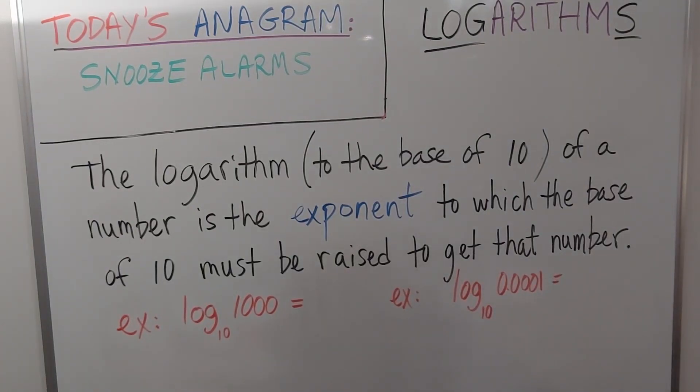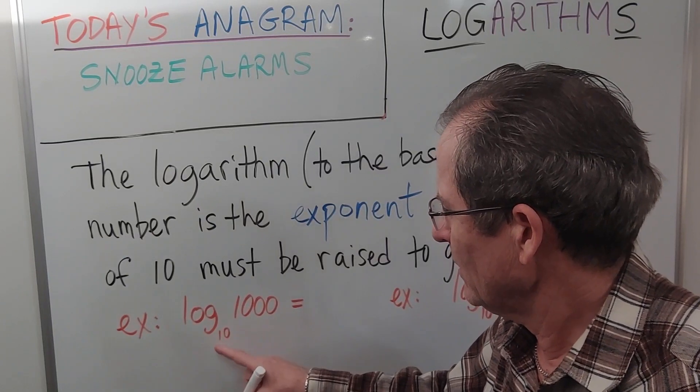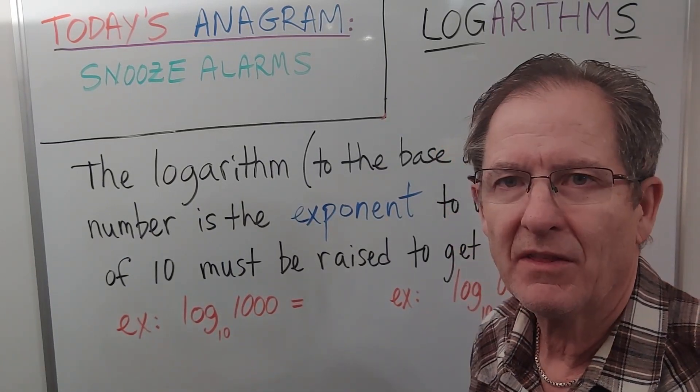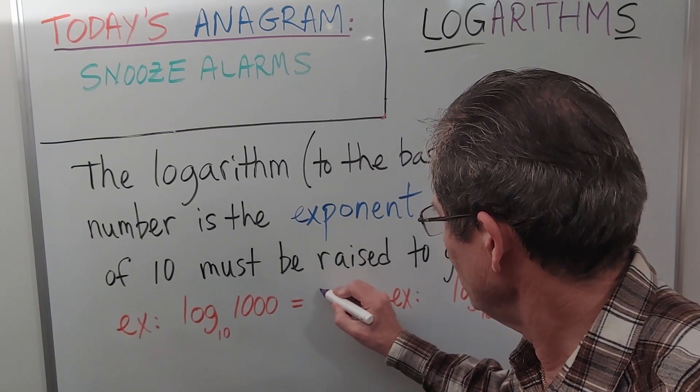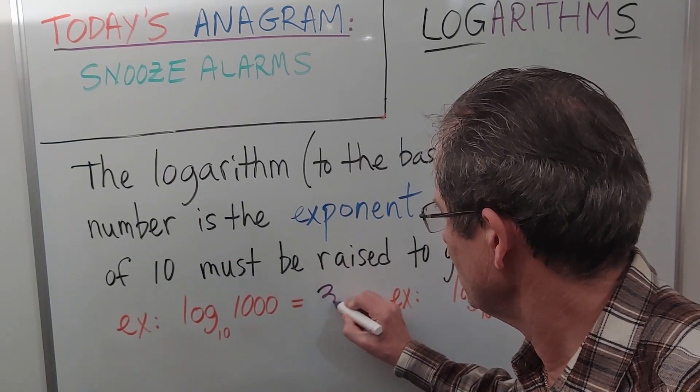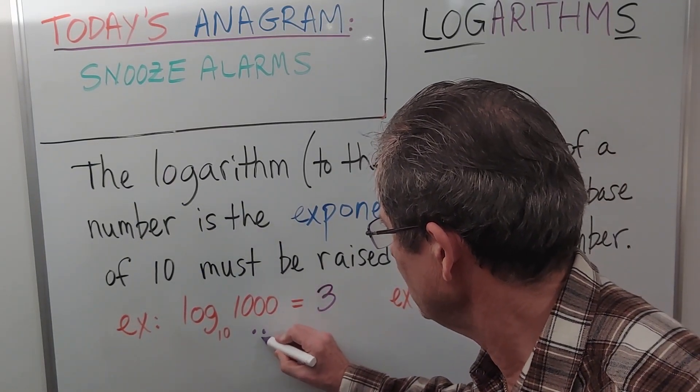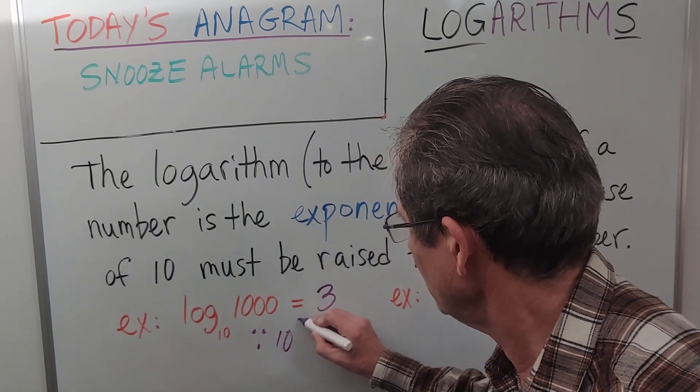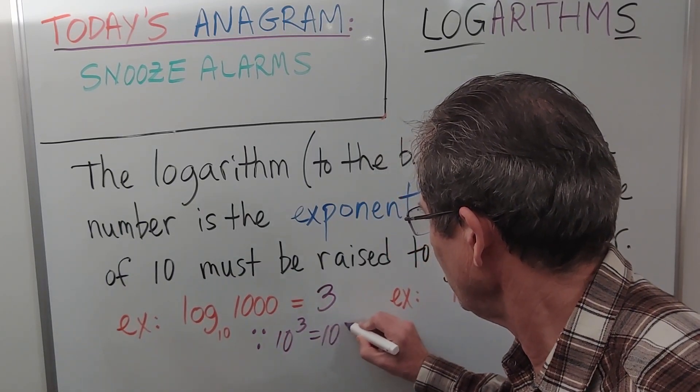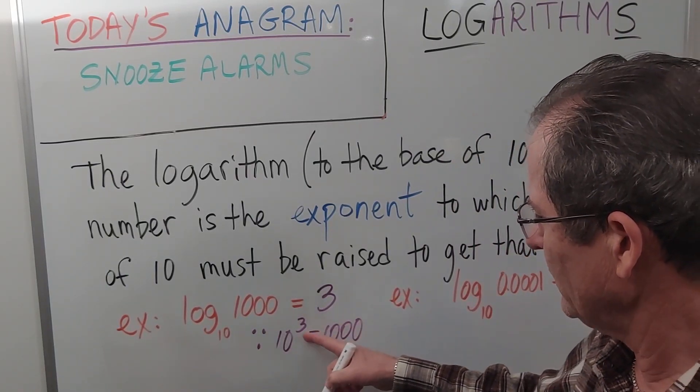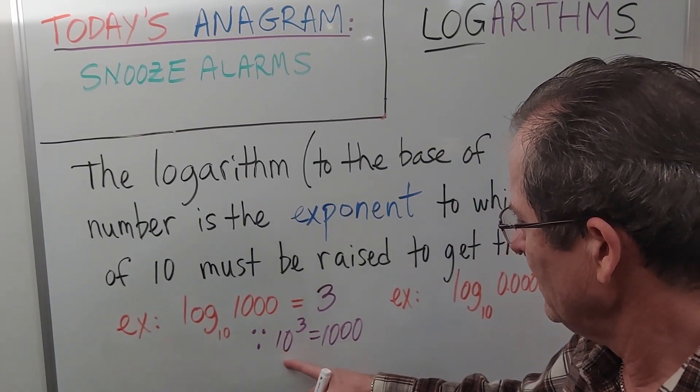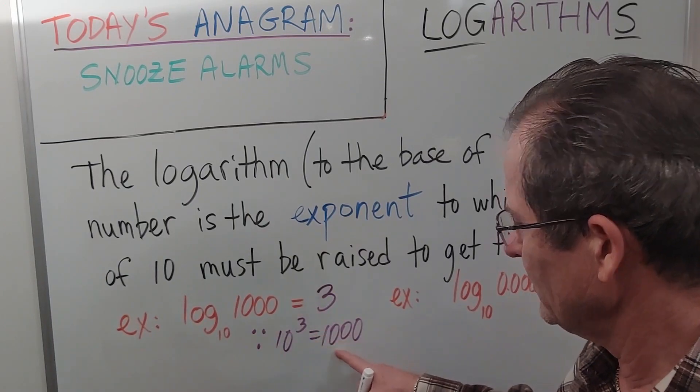So let's apply that definition. What is the log to the base 10 of a thousand? Well you probably know or you've figured out by the definition it's 3. Since 10 to the 3 equals a thousand. So 3 is the exponent to which the base, which is 10, must be raised to give that number, a thousand.